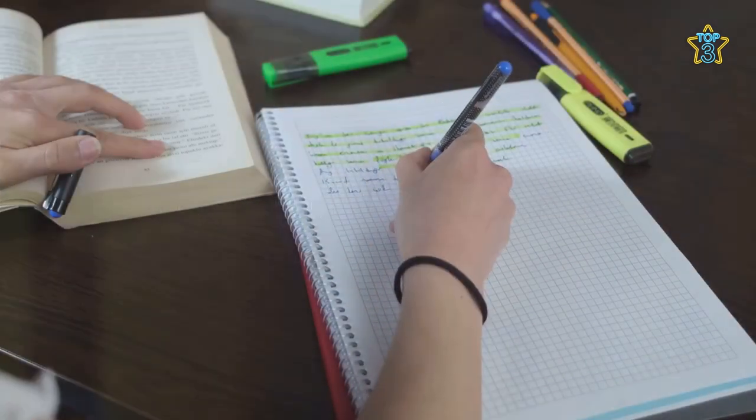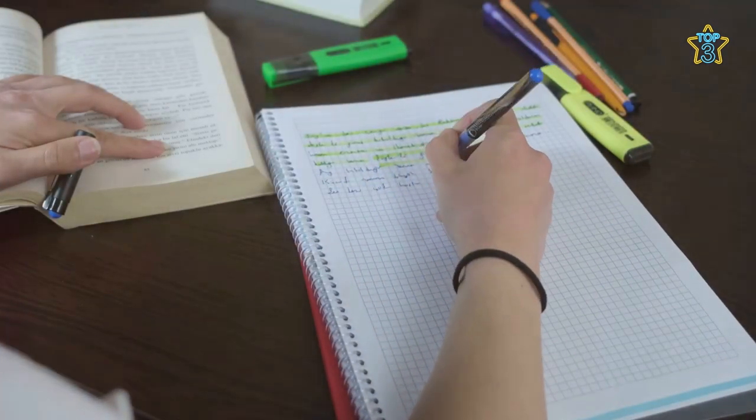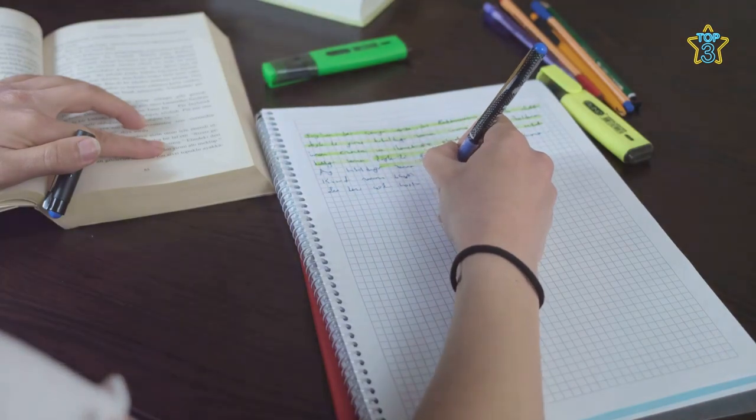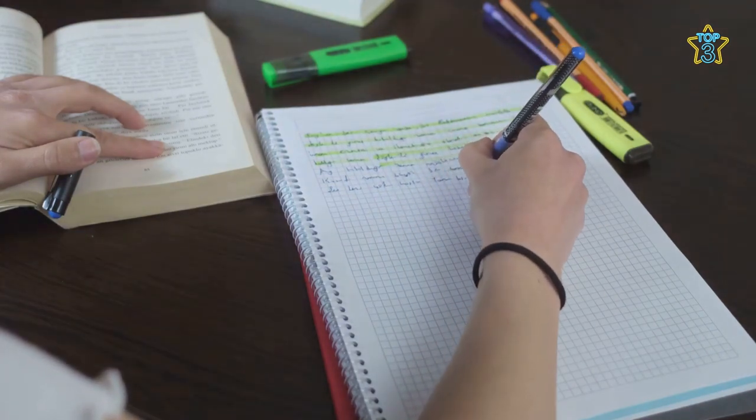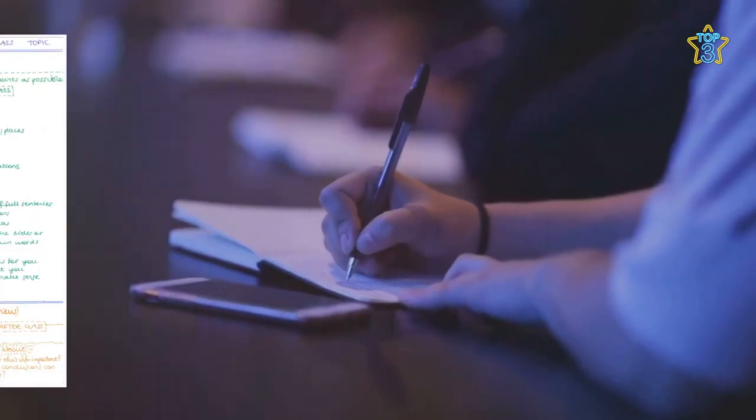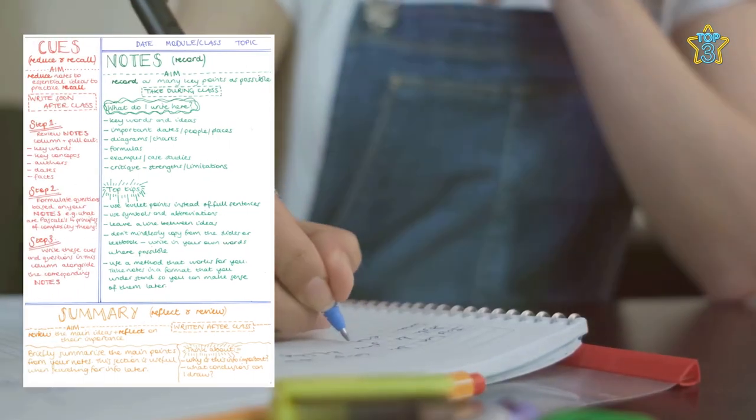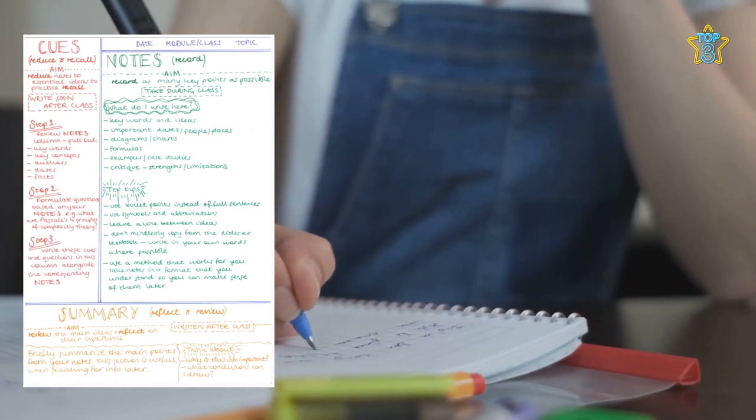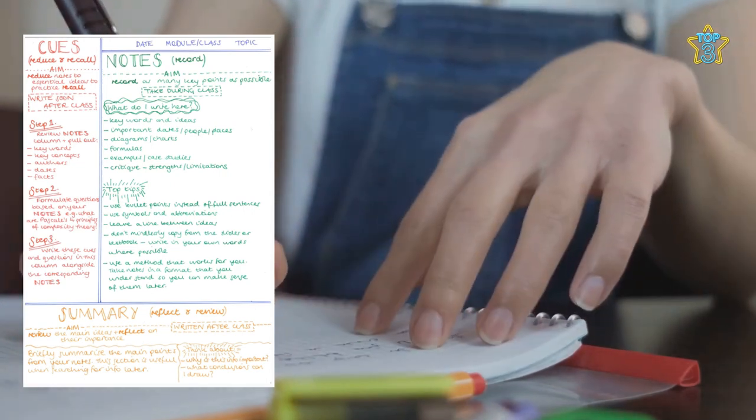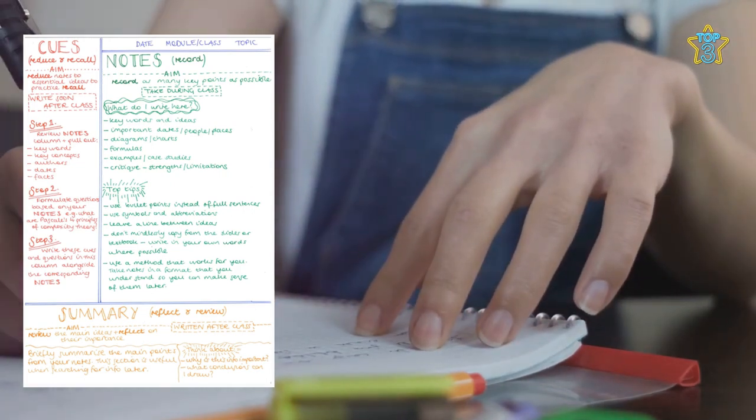It's not just for Ivy Leaguers, you know. The Cornell method is a systematic format for condensing and organizing your scribbles. Picture your paper divided into three sections. At the top, you have the Cues section. This is where you'll jot down questions or keywords after the lecture, serving as a quick reference for future study sessions.